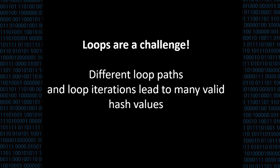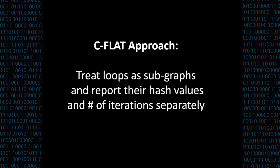There's one challenge. When applying this scheme to loops, then we get an exhaustive number of loop hashes, because every loop iteration and every loop path introduces a new hash value, which is then very complicated for the verifier to check. To tackle this challenge in C-FLAT, we simply treat loops as subgraphs and report the hash values individually, plus the number of iterations we have seen that hash value in the path.